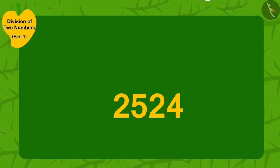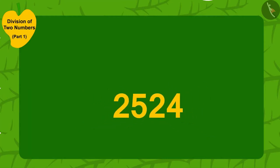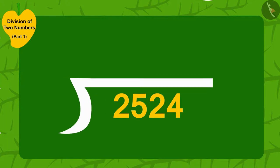Children, if Barbole uncle had two thousand five hundred twenty-four mangoes, could you use the same process of division learned now to find out how many villagers would he be able to distribute four mangoes each to? If you want, you can stop the video and find the answer.